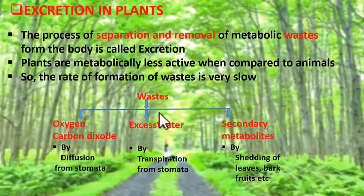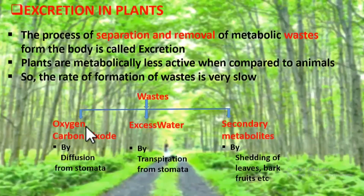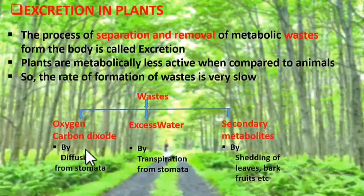How do plants expel out these waste materials? You already know how oxygen and carbon dioxide come out of the plant body — it is by diffusion from the stomata. Stomata are pores present in the lower epidermis of the leaves. The gases like oxygen and carbon dioxide, generated in photosynthesis and respiration respectively, come out of stomata by diffusion.